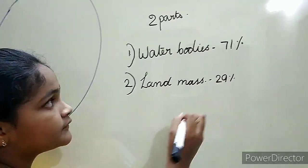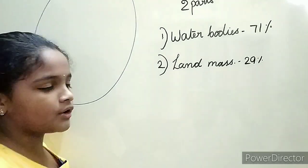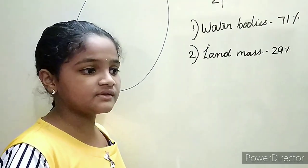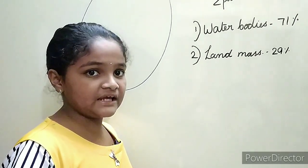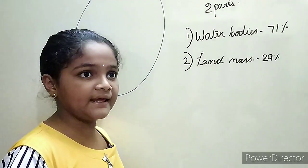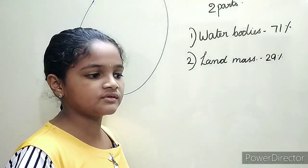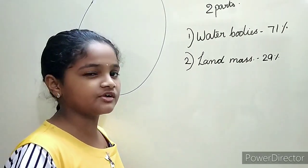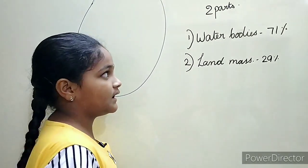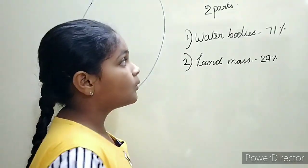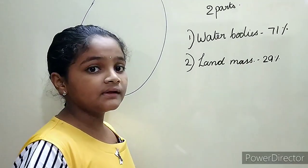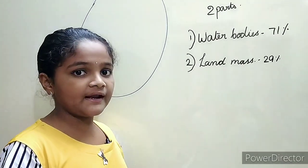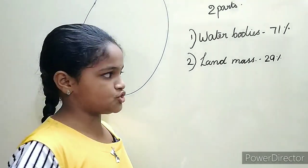The sources of water bodies are oceans, seas, glaciers, lakes, ponds, canals, rivers, etc. Water bodies are divided into five oceans.